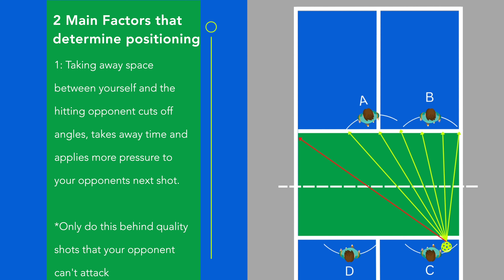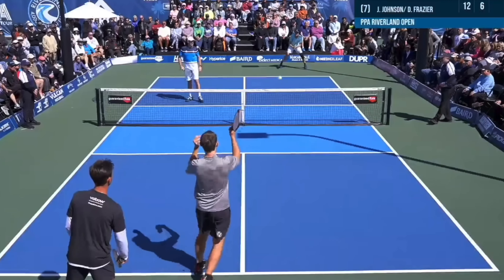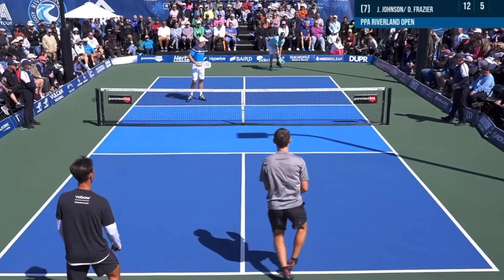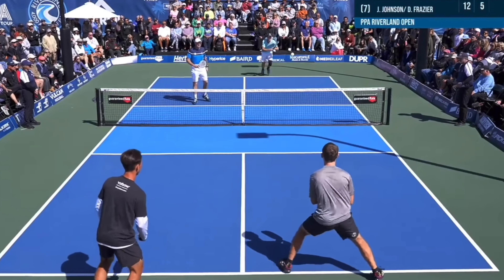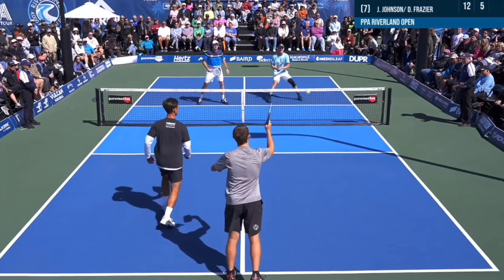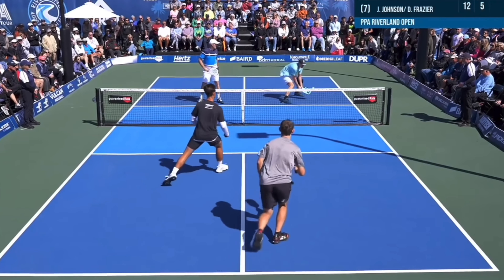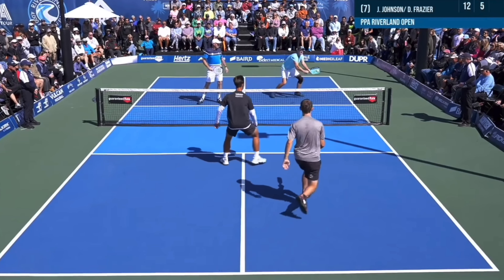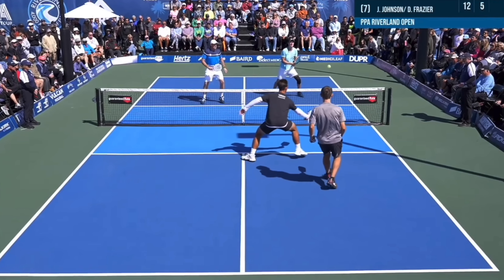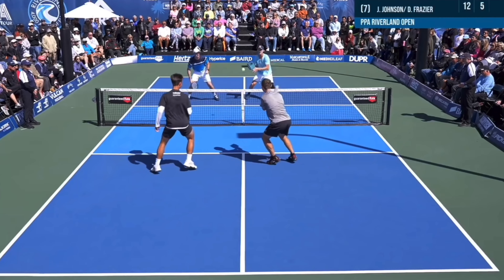Now let's take a look at this concept at work in a live point. We're going to be paying attention to Dylan Frazier and JW Johnson, who are in the near court. As Dylan hits his third shot drop, you're going to see JW releases forward to start applying pressure. Once they both realize that Dylan has hit a drop that's going to be good — low and unattackable to Riley — they both collapse on the ball, rush right to that spot, and try to apply pressure onto Riley's next shot.